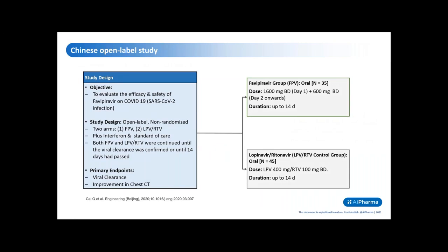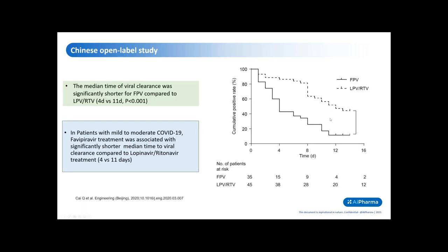The Japanese observational trial gives us an indication of the efficacy and safety of the drug, but it's not a controlled study. An actual controlled study from China in the earlier phases of the pandemic was designed to evaluate the efficacy and safety of favipiravir on COVID-19 patients. It was an open-label, non-randomized trial with two arms comparing favipiravir with Kaletra — a combination of lopinavir and ritonavir. The primary endpoints were viral clearance and improvements in chest CT. The median time to viral clearance was significantly shorter for favipiravir: four days versus 11 days in the Kaletra group.